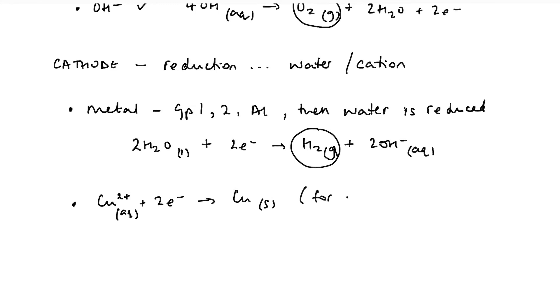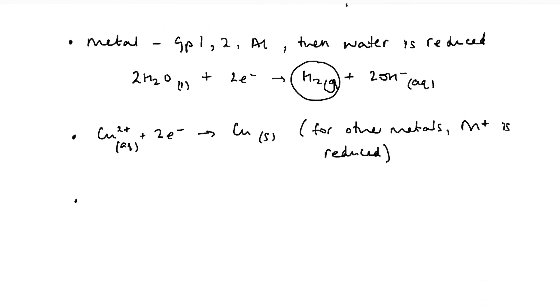So for other metals, metal ion is reduced. And finally, if we are electrolyzing an acid, then it's the hydrogen ions that are reduced. 2H+ plus 2e- going to form hydrogen gas. And once again, we'd have hydrogen bubbled off at the cathode. Going back a step, if it's the metal that is reduced, then that would be deposited on the cathode itself.